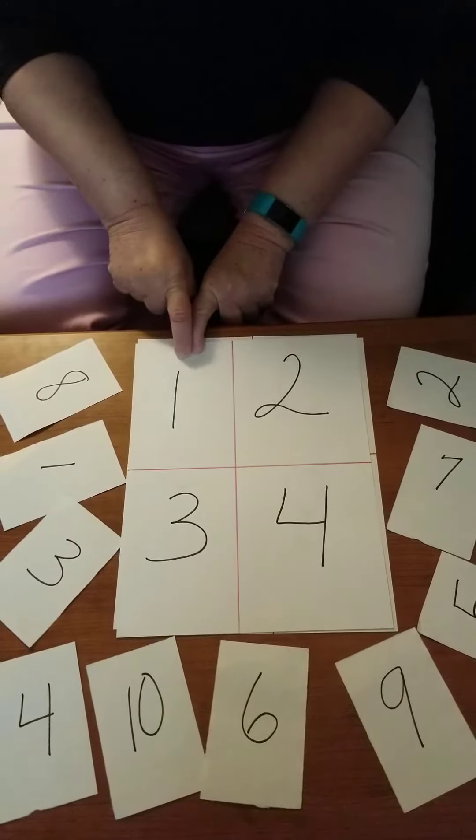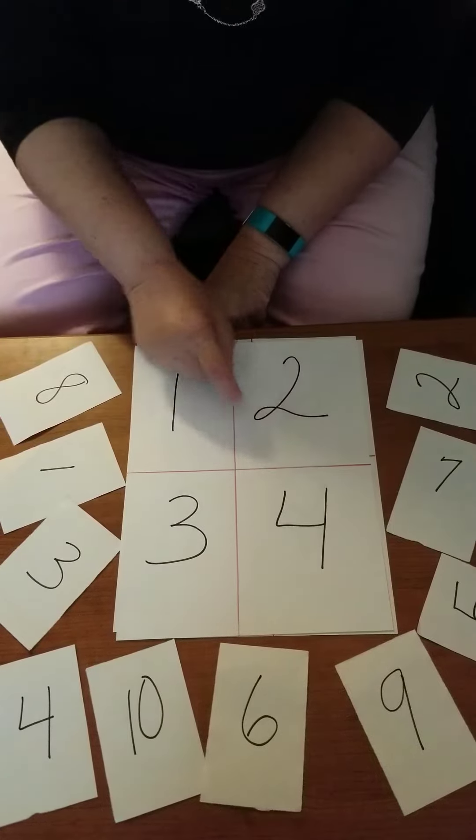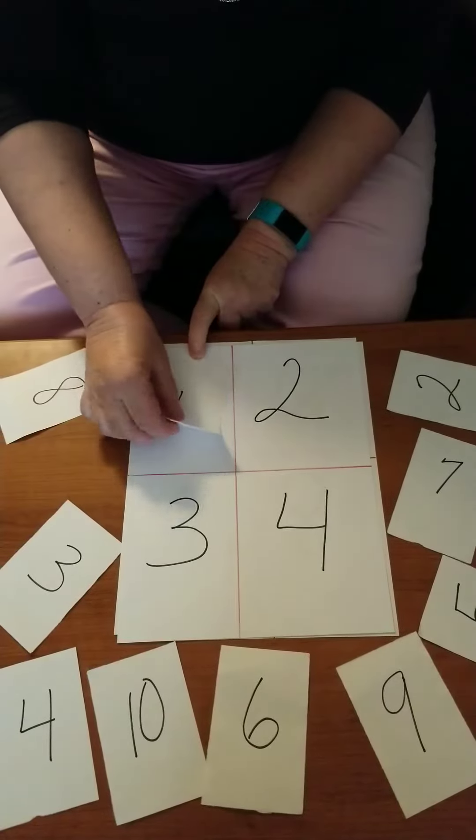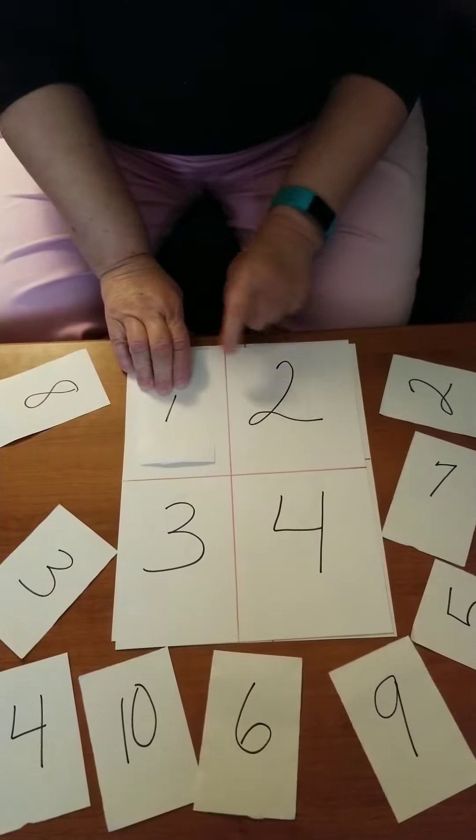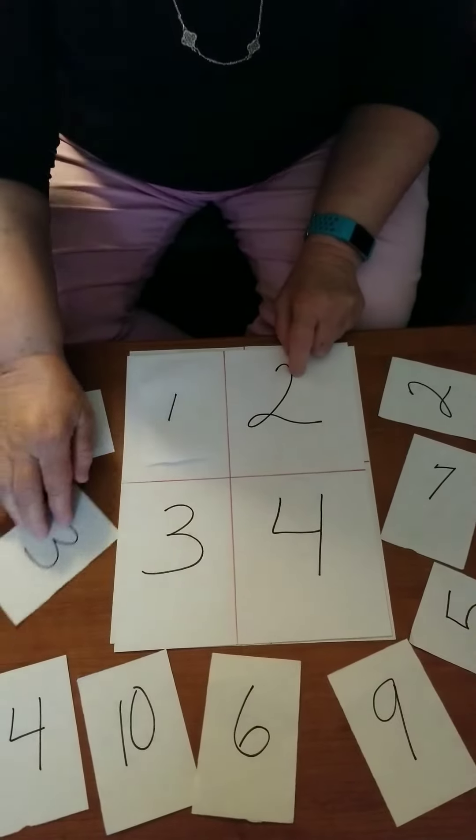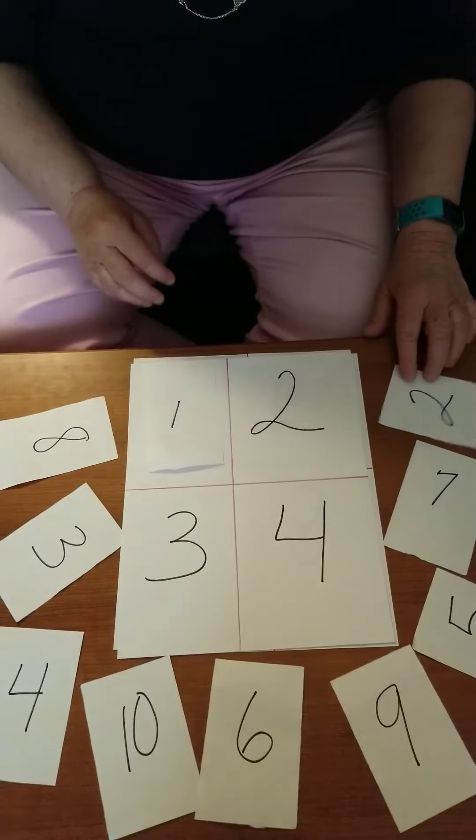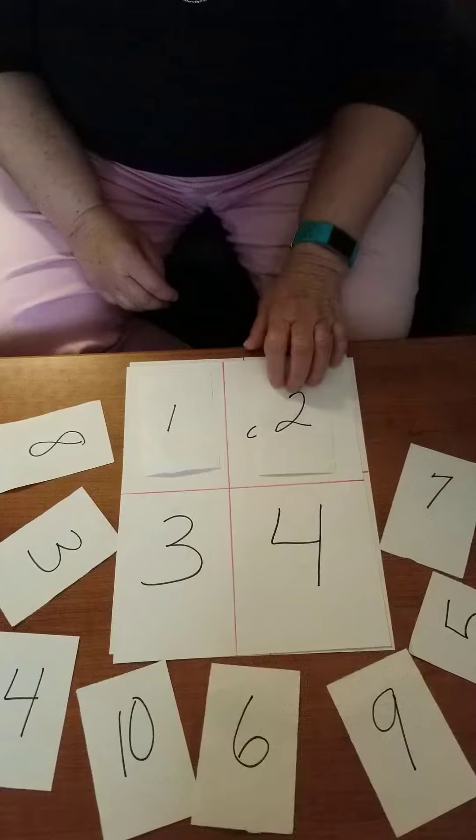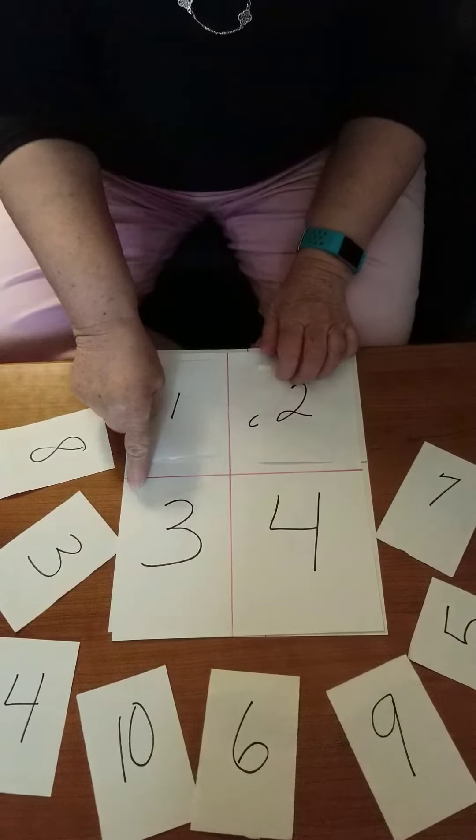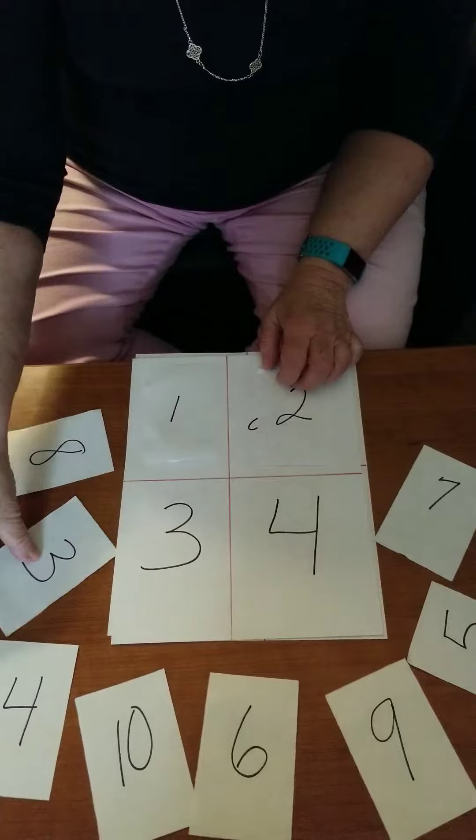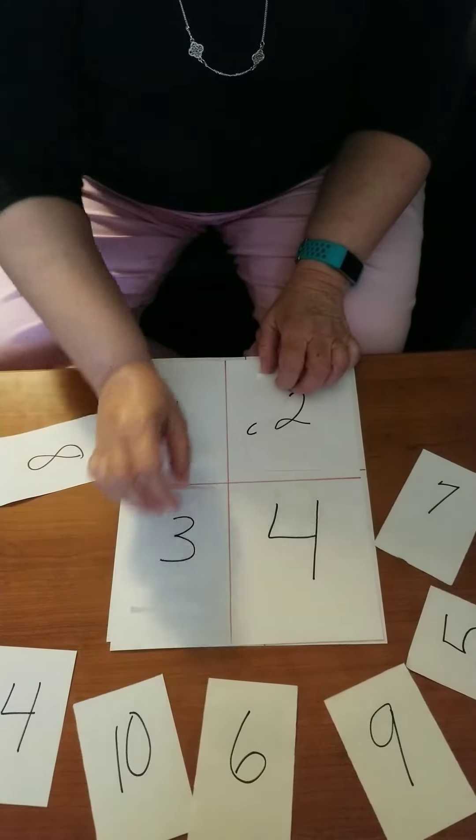Okay, this is number one. Let me look. Here's number one. This is number two. Let me look through all our numbers and see where is number two. Here's number two. This is number three. Where is number three? Here it is, number three.